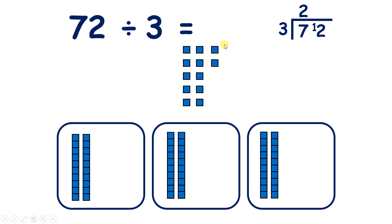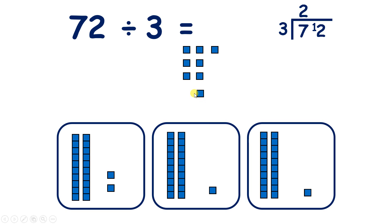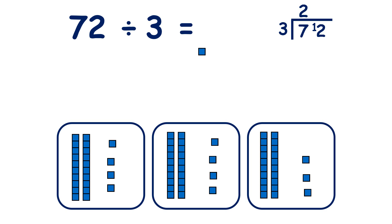Now we have 12 units to divide by 3. Let's share out our units, and we now have 4 units in each group, because 12 divided by 3 is 4. So 72 divided by 3 is 24.